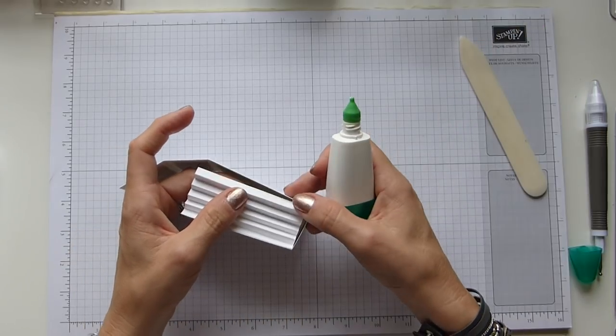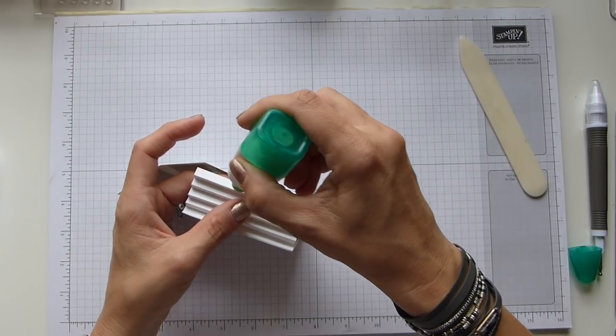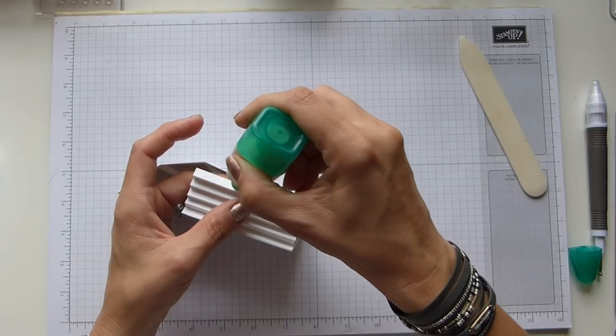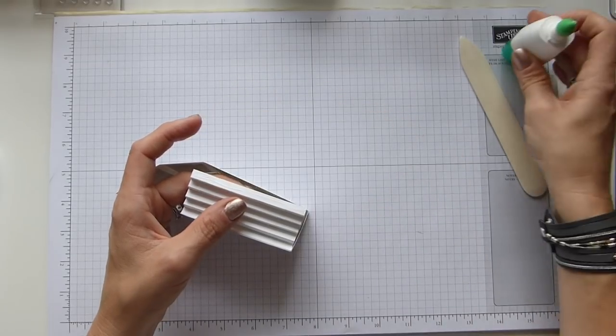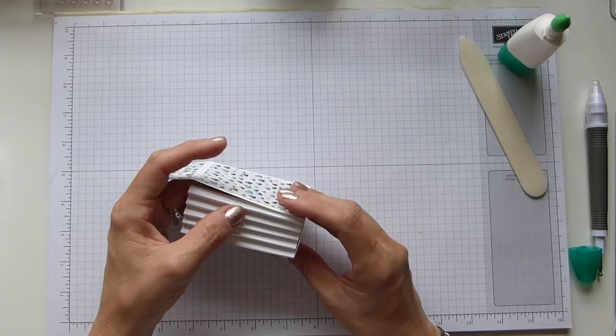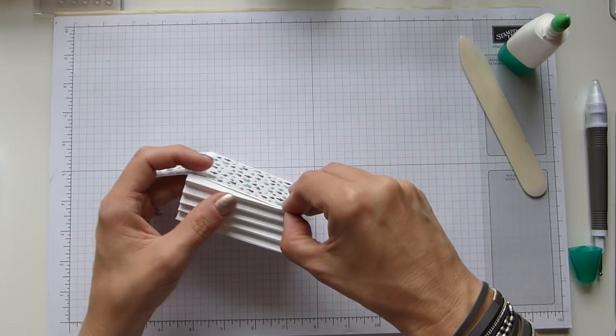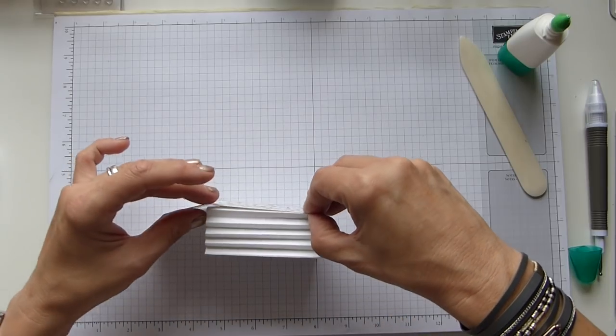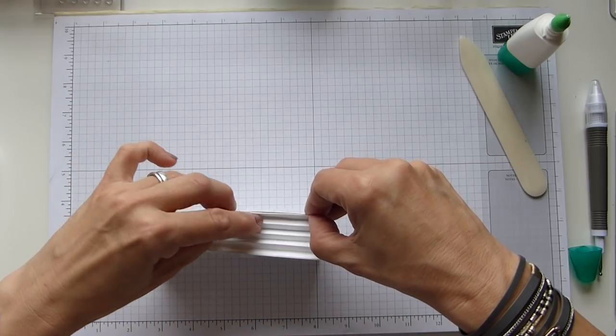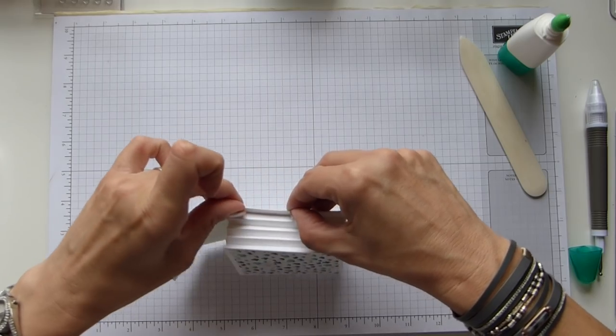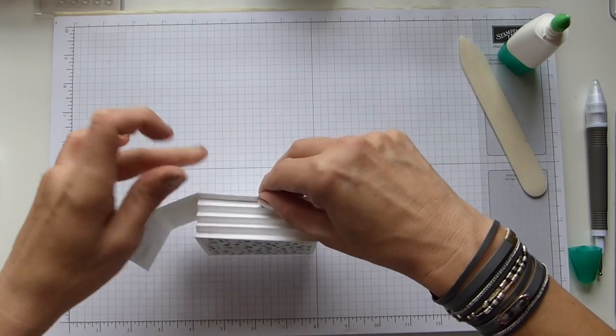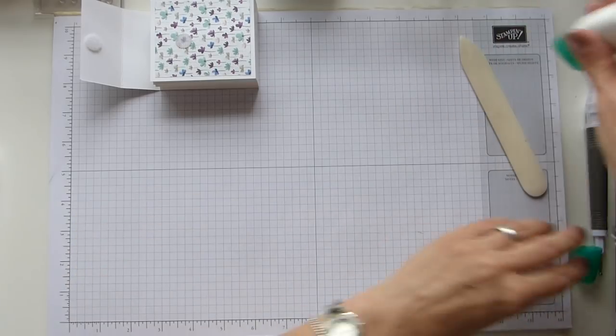And then the last bit to do on the back there. That just sits on that bit once you've got it in place and you're happy with it. There we go. I'm just going to give it a pinch. Now I'm just going to leave that to one side whilst I do my stamping and leave that to dry.